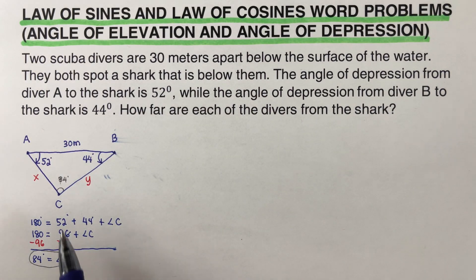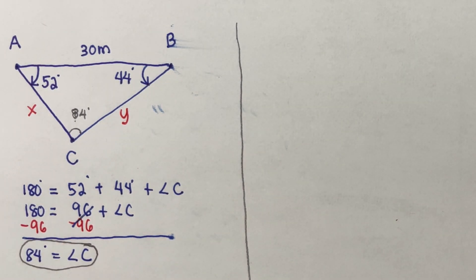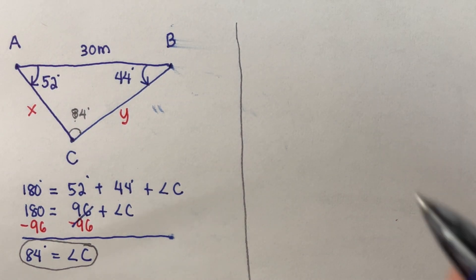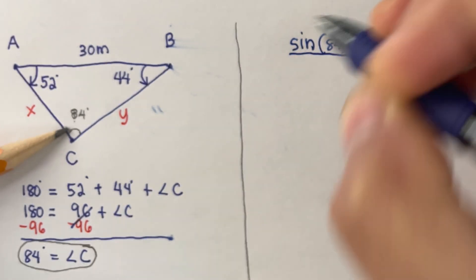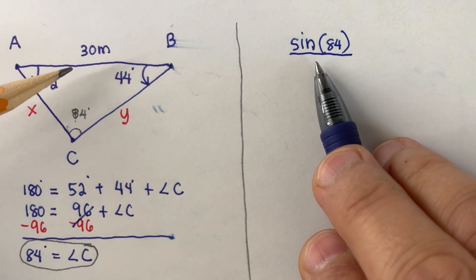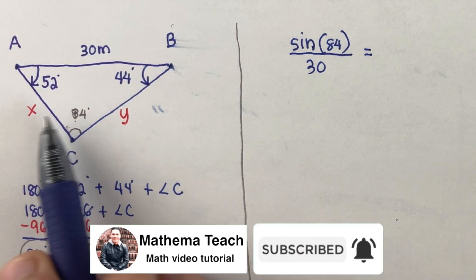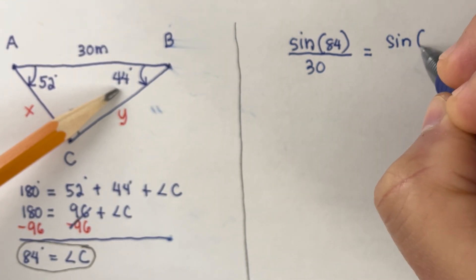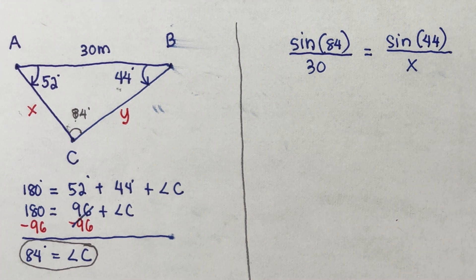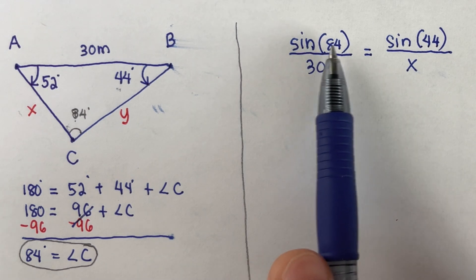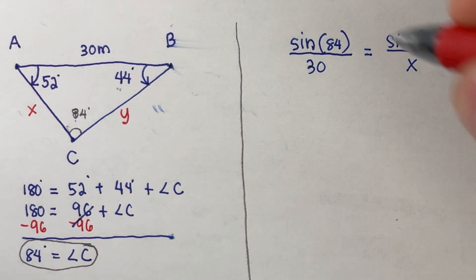Now we solve for side x using the law of sines. We set up the proportion: sine of 84 over 30 equals sine of 44 over x. This follows the rule: sine of the angle over the length of the side across from it equals sine of the angle over the side across from it. We cross-multiply to solve for x.